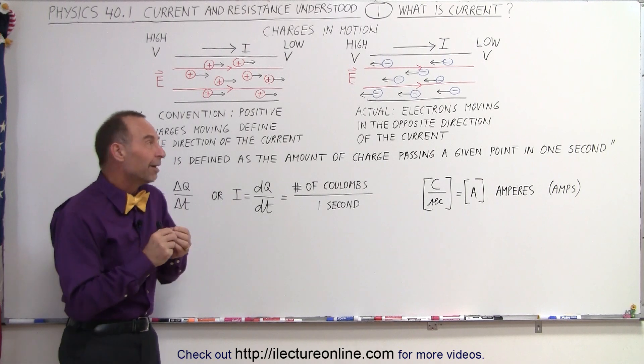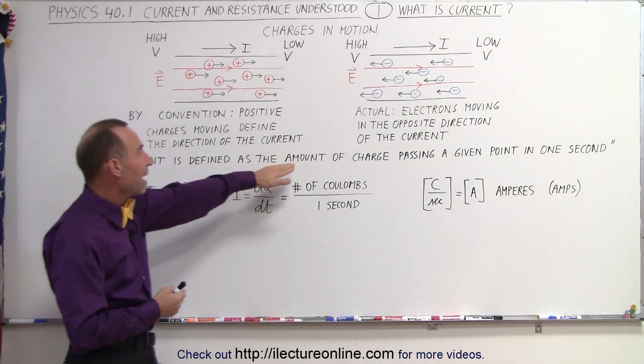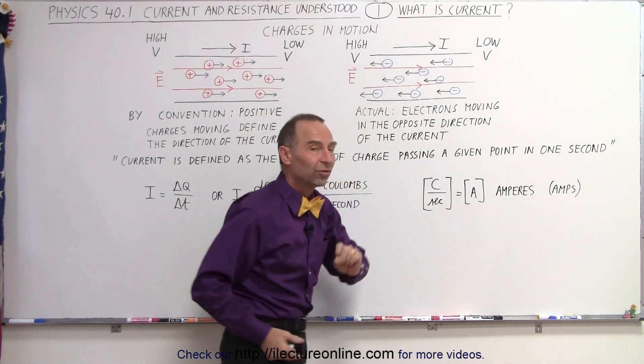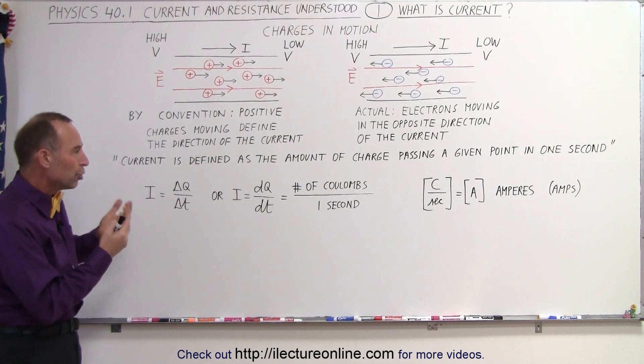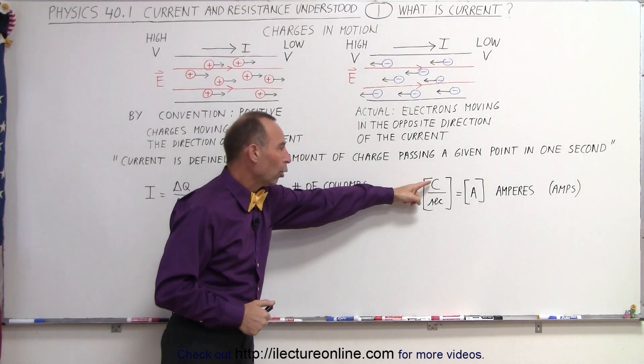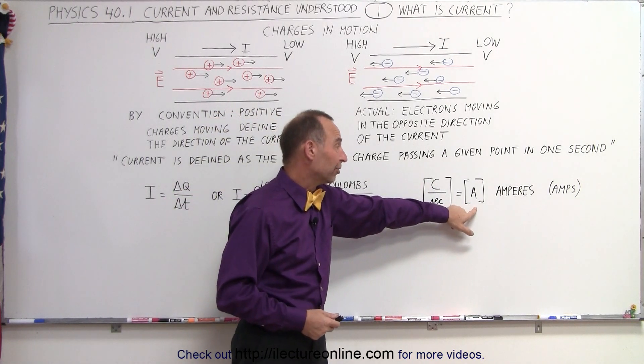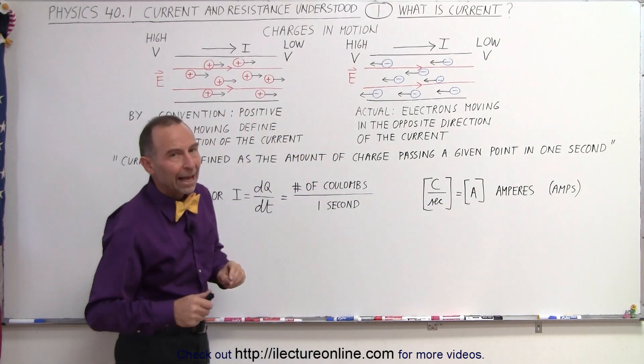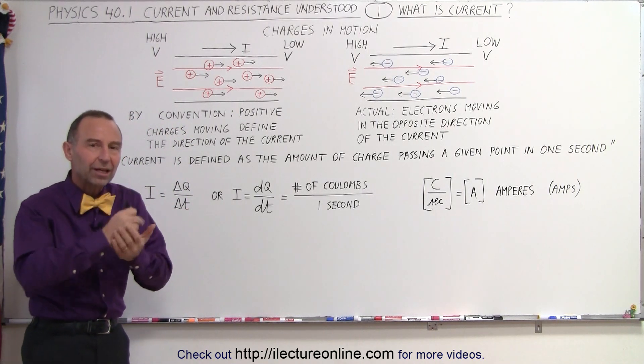A more eloquent definition might be this: current is defined as the amount of charge passing a given point in one second. So that's how you define current, and the units for that is coulombs per second. We call that amps or amperes, and we use the letter A to indicate that. So one amp is one coulomb per second passing a given point.